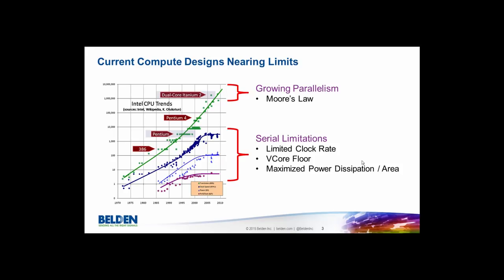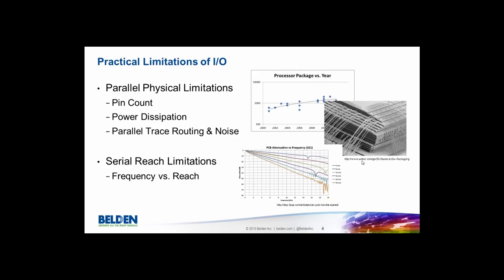These are serial limitations. We lost our ability to grow clock rate — we're really limited by the power dissipation of the devices, what we call the Vcore floor. We can't get the power down anymore because of the voltages needed to drive the silicon, the CMOS process. That's implementing limitations. We also have IO limitations: there's only so many pins on a package, and even with stacked dies you still run out of physical space.